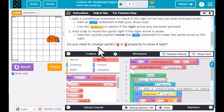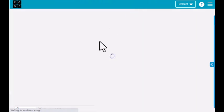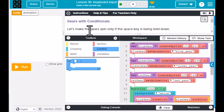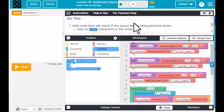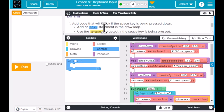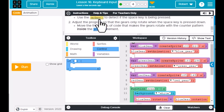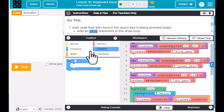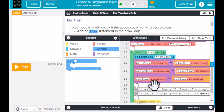The next skill building: let's make the gears spin only if the space key is pressed down. We're going to have to add code that will check if the space key is pressed down. Add the if statement in the draw loop. Use the key down to detect if the space key is being pressed. Then adjust the program so that the gears only rotate when the space key is pressed down. Move the three lines of code that make the gears rotate with the counter pattern.